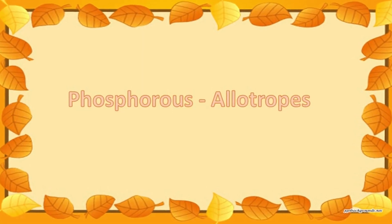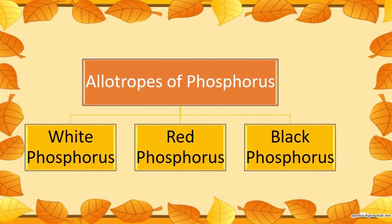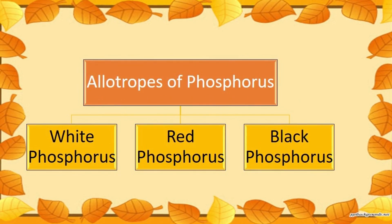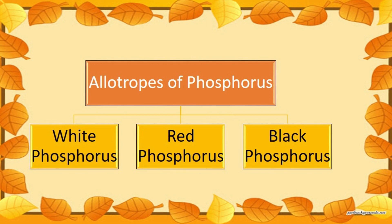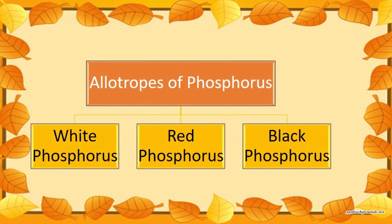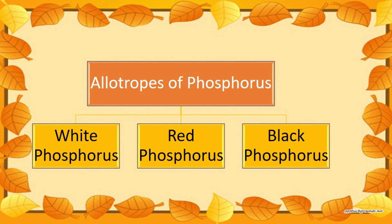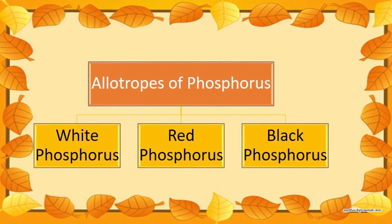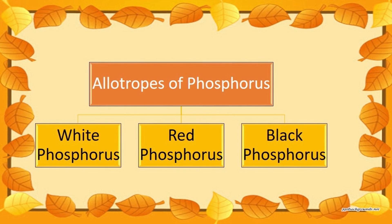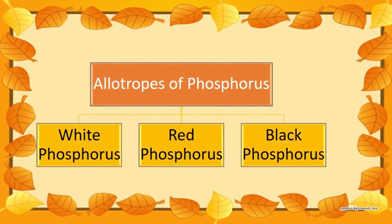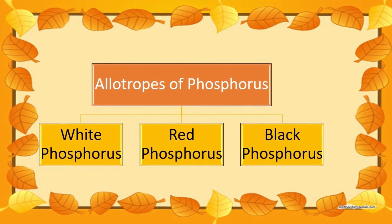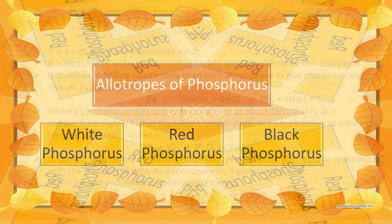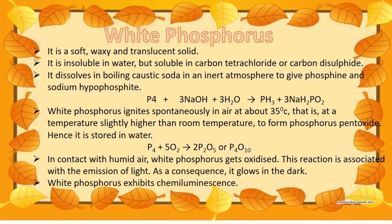We are going to learn about allotropes of phosphorus. The phenomenon of the existence of an element in more than one physical form is called allotropy. The different physical forms of the same element are called allotropes. Allotropes have different physical properties but similar chemical properties. Phosphorus exists in several allotropic forms; the main forms are white phosphorus, red phosphorus, and black phosphorus.